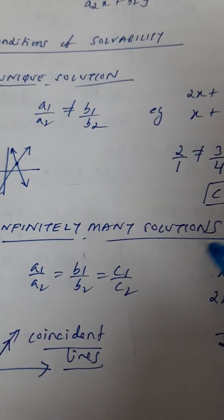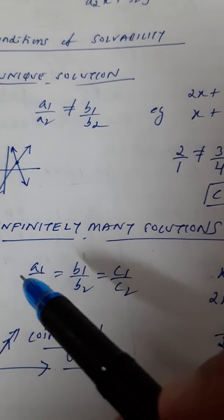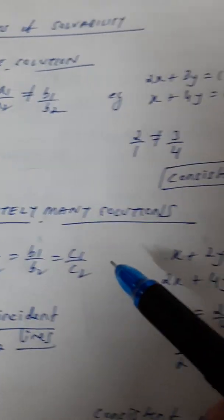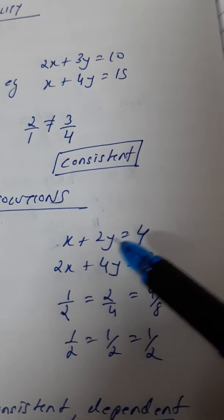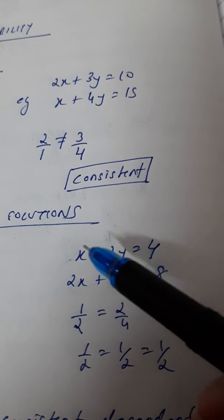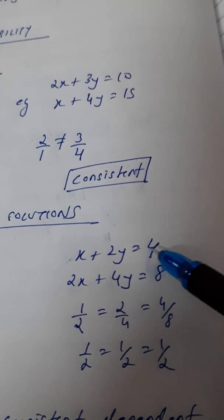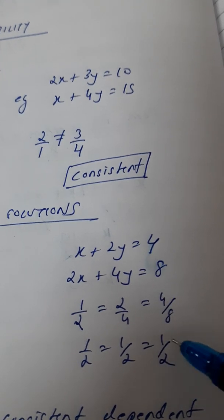The second condition is the linear equation can have infinitely many solutions. That happens when A1 by A2 and B1 by B2 and C1 by C2 are all equal to each other. All three. Let us give an example here. See, x plus 2y is 4. 2x plus 4y is 8. So, A1 by A2 is 1 by 2. B1 by B2 is 2 by 4. That is also 1 by 2. And C1 by C2 is 4 by 8. That is also 1 by 2.